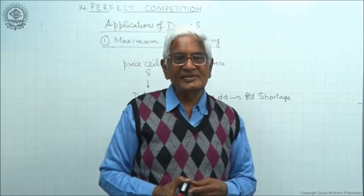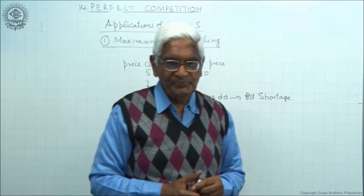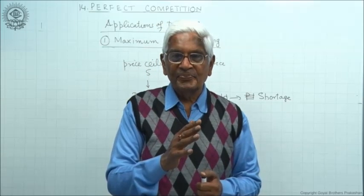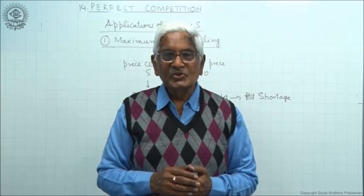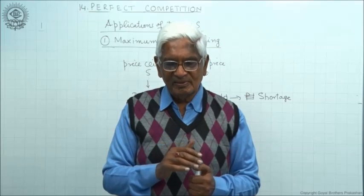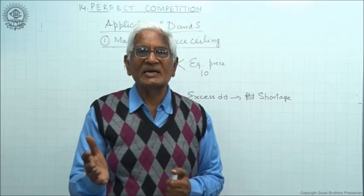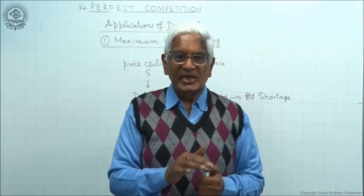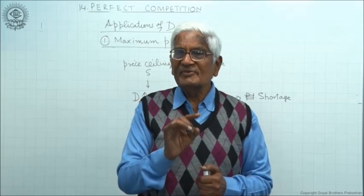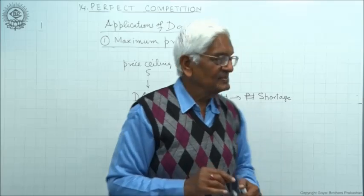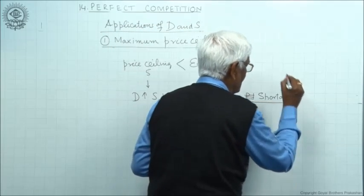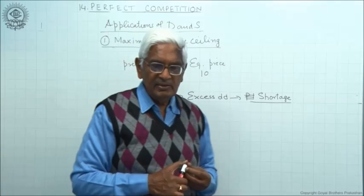Excess demand leads to shortage. You often hear the term 'shortage in the bazaar.' Shortage means at this price demand is much higher and supply is very low. The ultimate effect of maximum price ceiling is shortage of the good on which the price ceiling has been fixed.